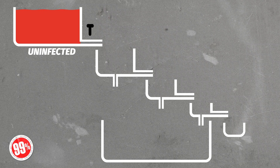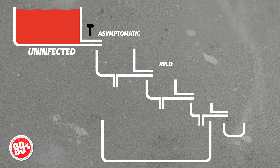That one has a pipe which leads into the asymptomatic vessel, which in turn leads into the mild vessel for people with mild symptoms, then the severe vessel, and then ultimately into the vessel for dead people.